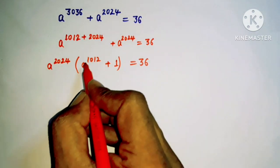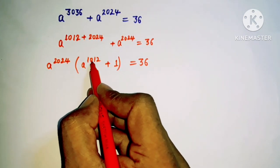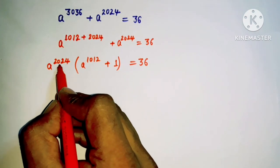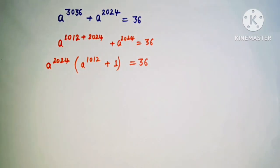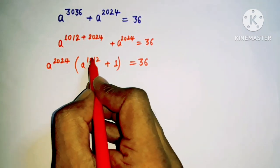Now you can focus here a to the power 1012 and here we have a to the power 2024. Obviously this number is just double of this number, so we can take this one as another variable.